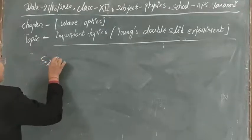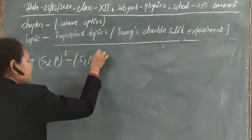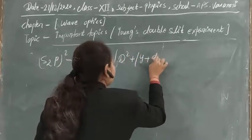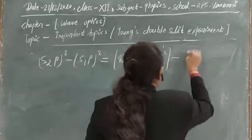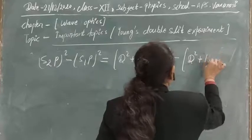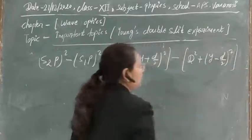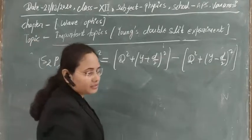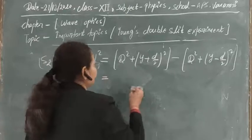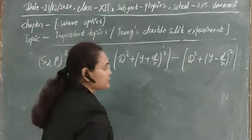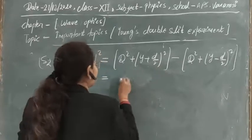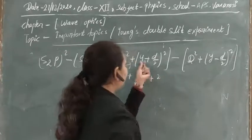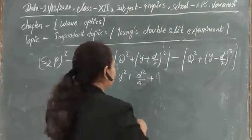Taking the difference: S2P² − S1P² = [D² + (y + d/2)²] − [D² + (y − d/2)²]. The D² terms cancel. Expanding: (y + d/2)² = y² + d²/4 + 2y·(d/2) and (y − d/2)² = y² + d²/4 − 2y·(d/2). After subtraction, the y² and d²/4 terms cancel, leaving 2yD.